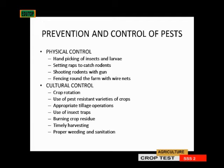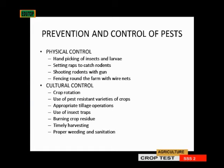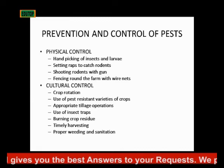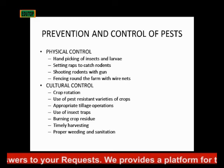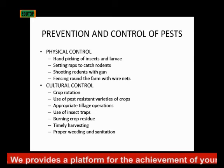How do we prevent or control pests on a general level? Just as with controlling disease, we are going to use four methods: the physical method, the cultural method, the biological method, and the chemical method. The physical method includes hand-picking the insects. You can set traps to catch rodents, use a scarecrow, shoot a gun or use a catapult, and you can fence your farm around with wire netting.